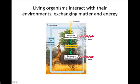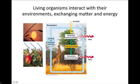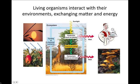Living organisms interact with their environments exchanging matter and energy. Producers, like plants, use the sun's light as an energy source. This energy is transformed into chemical energy like the fruits we love to eat. Consumers then consume chemical energy to sustain life. When consumers die, decomposers, like this fungus, break down the organism to recycle the materials.